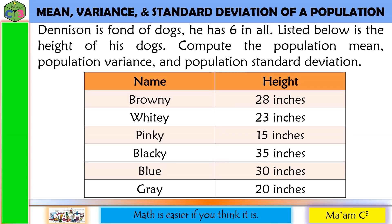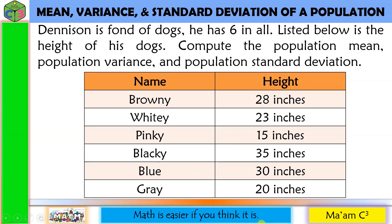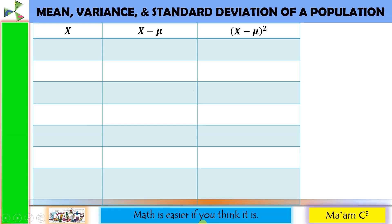Denison is fond of dogs. He has six in all. Listed below is the height of his dogs. Compute the population mean, population variance, and population standard deviation. So he has six dogs with their corresponding heights. To solve for the mean, variance, and standard deviation of a population, we are going to need three columns: x, x minus mu, and the quantity x minus mu squared.